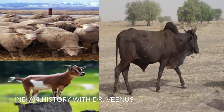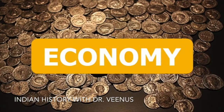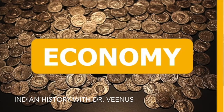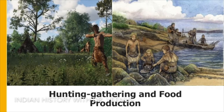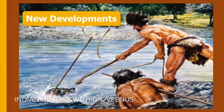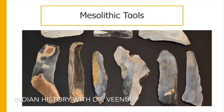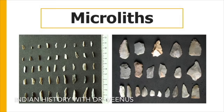The animal bones were mainly sheep, goat, humped cattle, etc. The economy was therefore based on a combination of hunting, gathering and food production. The period paved the way for many new developments. The Mesolithic period saw tools becoming smaller and compact. These tools were known as microliths, such as triangles, trapezoids, points, blades and fish hooks.